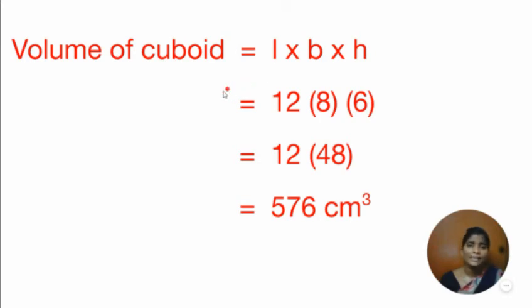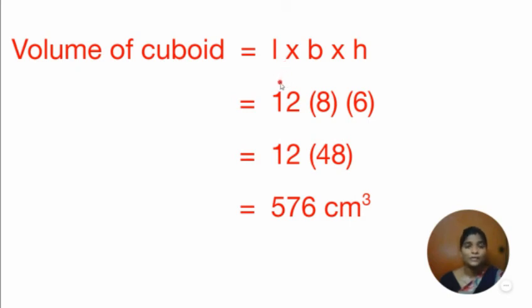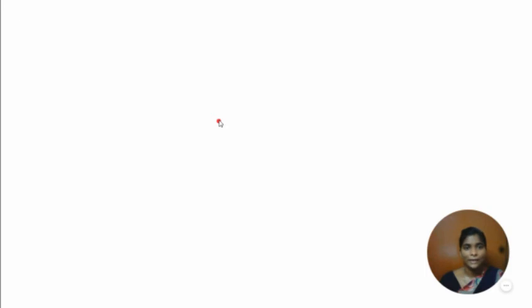Volume of cube is equal to A cube cubic units. In a question, if they give the side and ask for volume of cube, substitute the side value as A in the formula to get the volume of cube. I hope all of you are clear. Kindly practice and revise for your test.